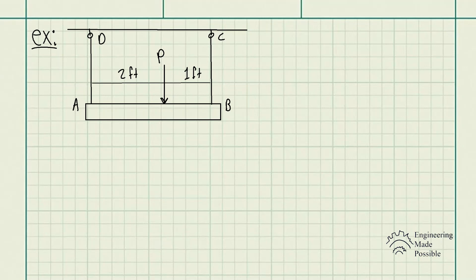For this example, we have a problem statement: the wires each have a diameter of half an inch, length of two feet, and are made of 304 stainless steel. Determine the magnitude of force P so that the rigid beam tilts 0.015 degrees.